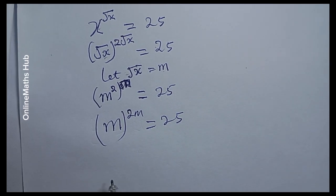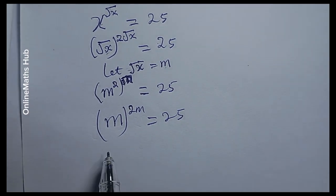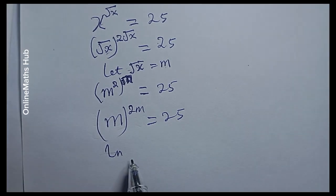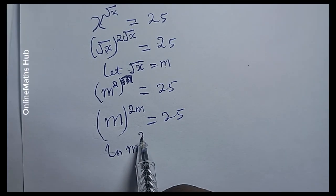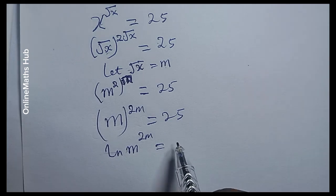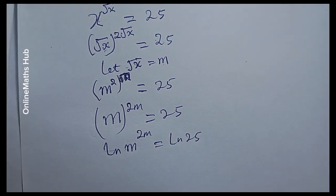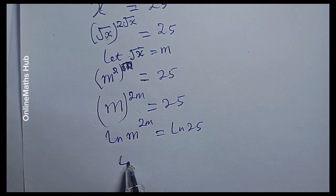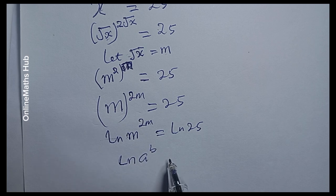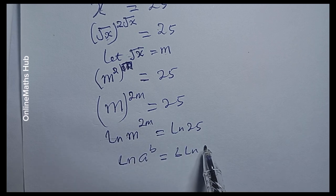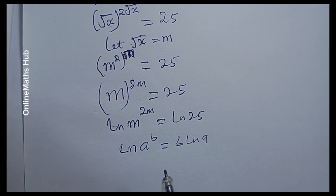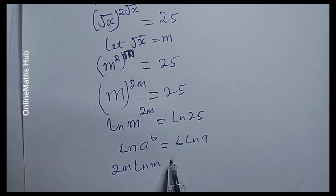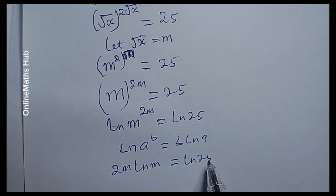What I will do next is take the natural log of both sides. If I do that, I'm going to have the natural log of m to the power 2m, equal to the natural log of 25. I'll utilize the property of logarithms: the natural log of a to the power b can be written as b multiplied by the natural log of a. Applying that here, I get 2m multiplied by the natural log of m, equal to the natural log of 25.